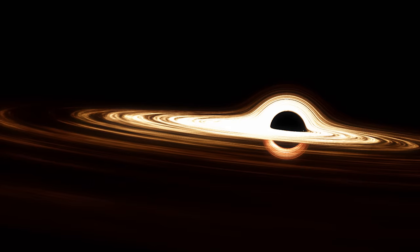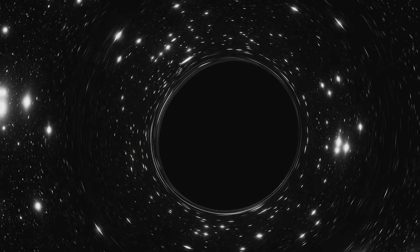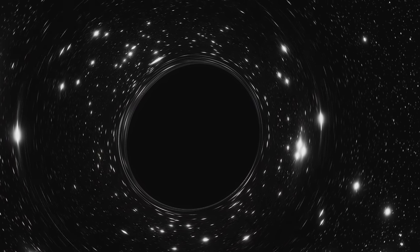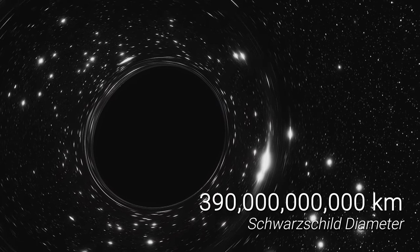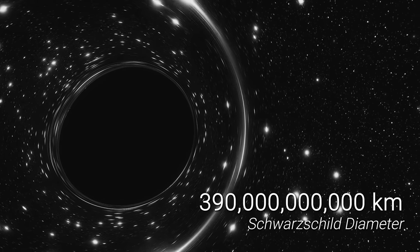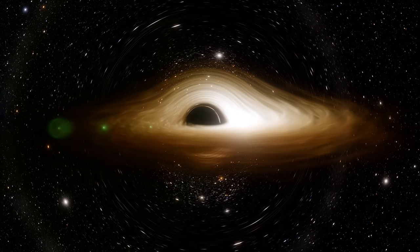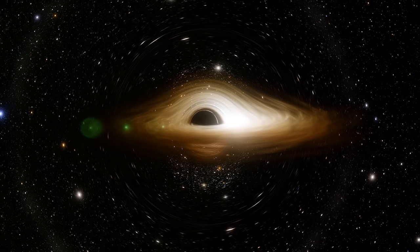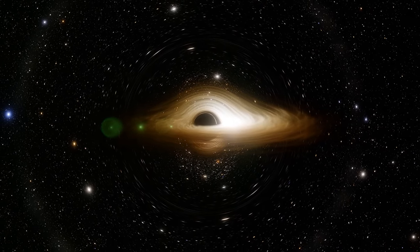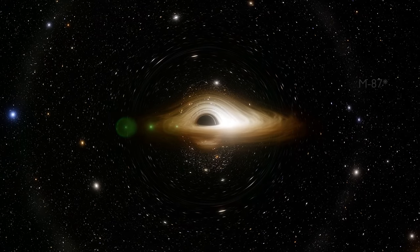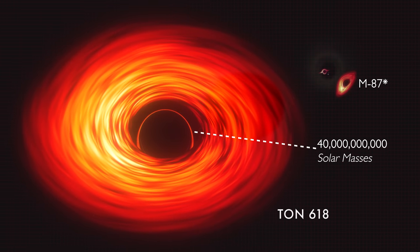At such an extraordinary weight, the event horizon of this beast would stretch for little under 400 billion kilometres, with a radius more than 40 times the distance between Neptune and the Sun. Unfortunately, however, this estimate has been rolled back somewhat in recent years, now more aligned with the mass of IC1101's black hole of around 40 billion solar masses.